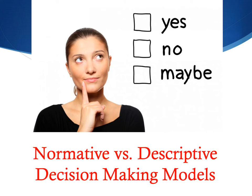Descriptive decision-making models, on the other hand, are more often employed by psychologists. Descriptive decision-making models try to explain the process that people actually use when they are making decisions, not the way people ought to make decisions if they were rational.